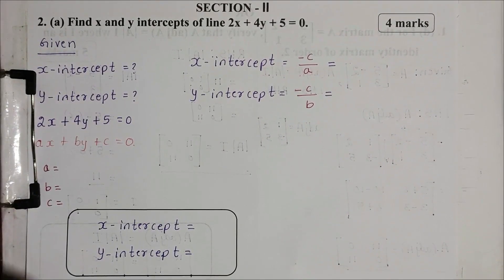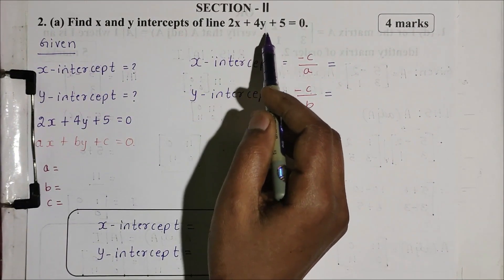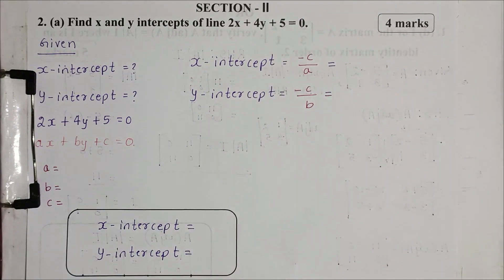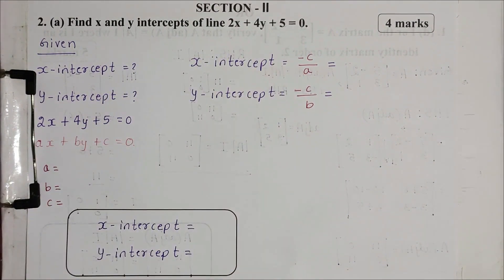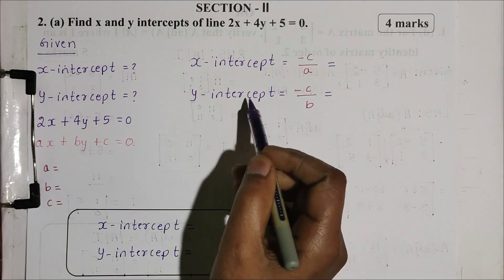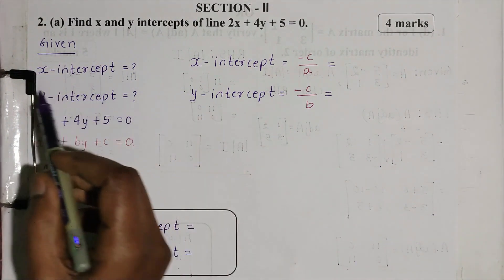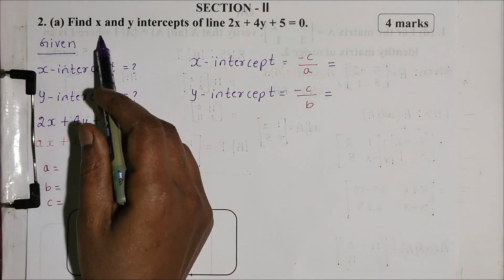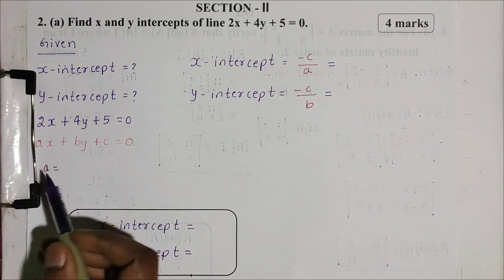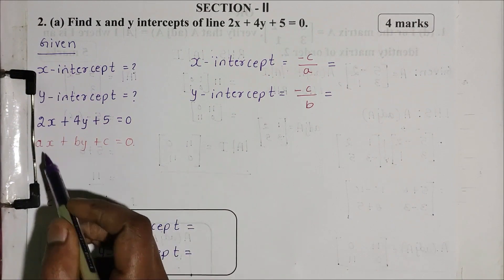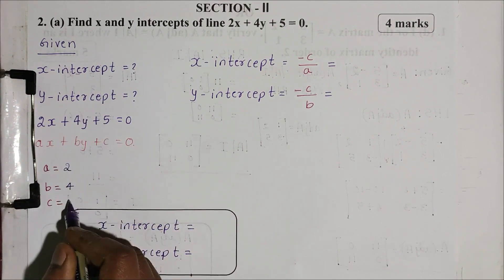Section 2a: Find x and y intercepts of the line 2x plus 4y plus 5 equals 0 — 4 marks. The formula for a general line ax plus by plus c equals 0: x-intercept is minus c divided by a, and y-intercept is minus c divided by b. Here a equals 2, b equals 4, c equals 5.